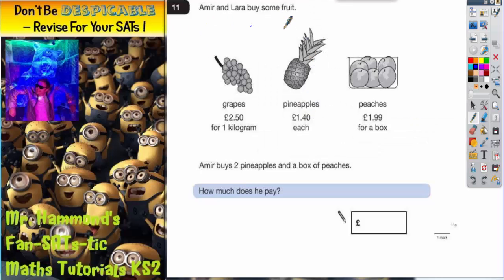Question 11. Amir and Laura buy some fruit. We've got grapes which are £2.50 a kilogram, pineapples are £1.40 each and peaches are £1.99 for a box.